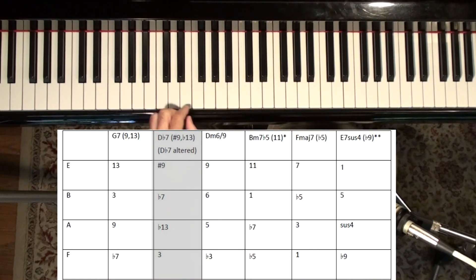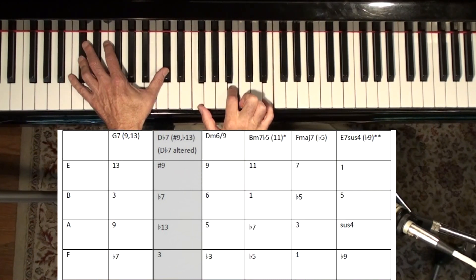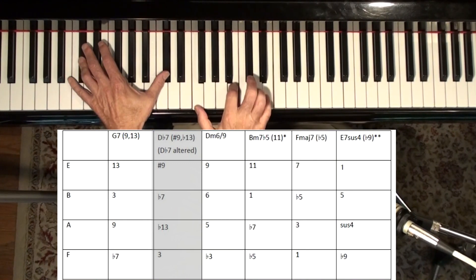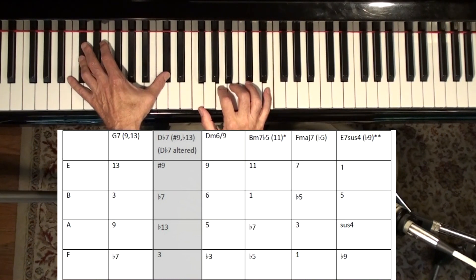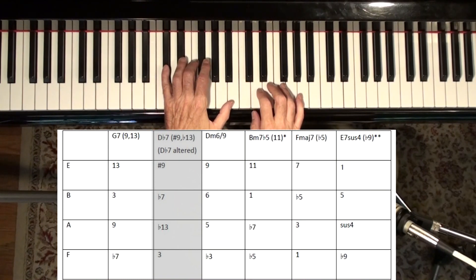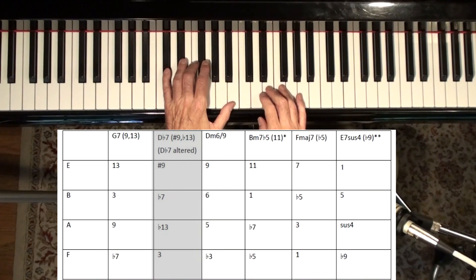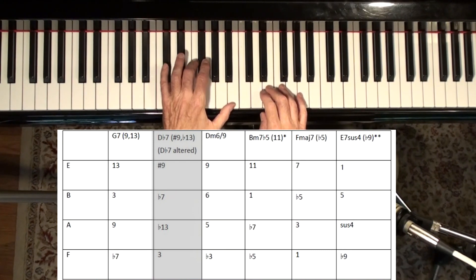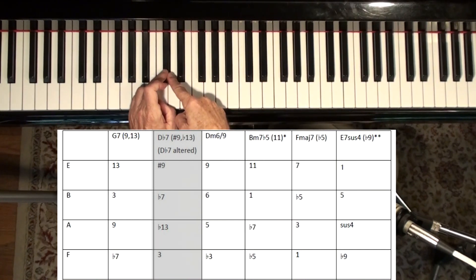However, as a D flat dominant, these are no longer the 9th and the 13th. These are the flat 13 and the sharp 9. Now, maybe you know a sharp 9 chord would be something like this. Here's one in C. Now, you can add that flat 13 to any sharp 9 chord. And this is what you call an altered dominant, because the 9 or the 11 or the 13 or any combination of those are not just 9s, 11s, and 13s.